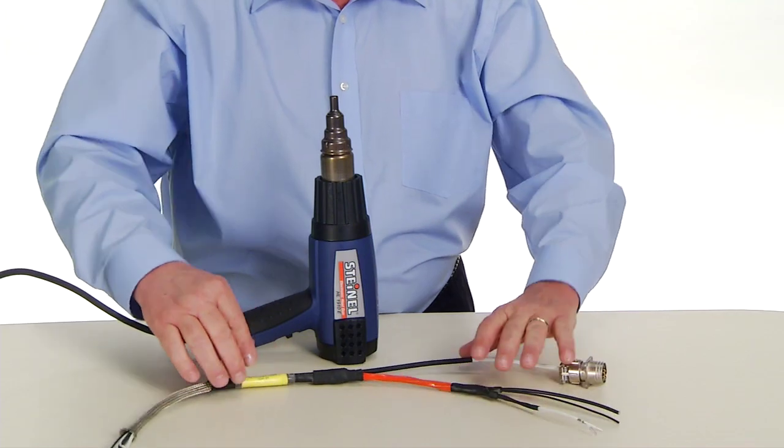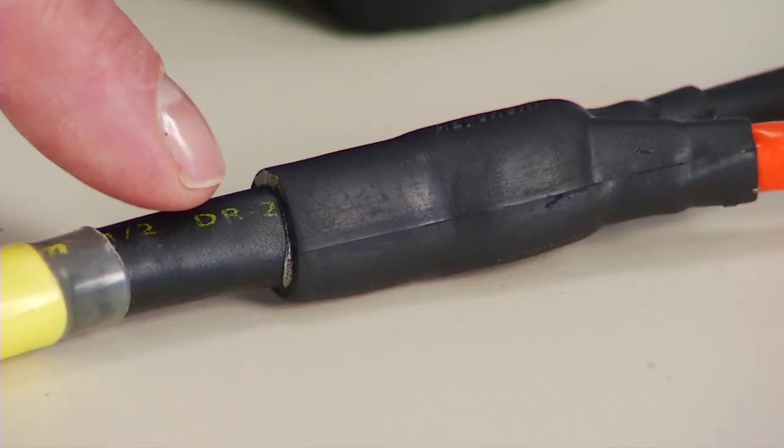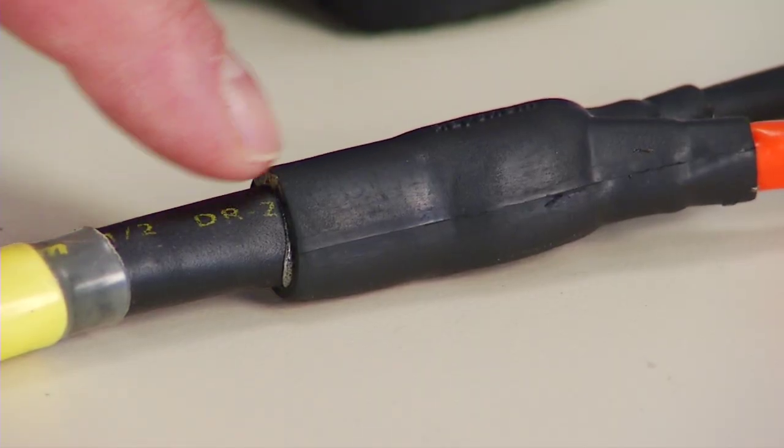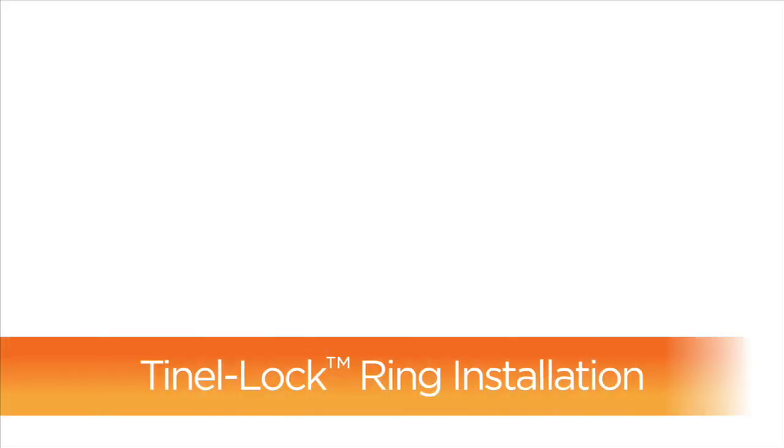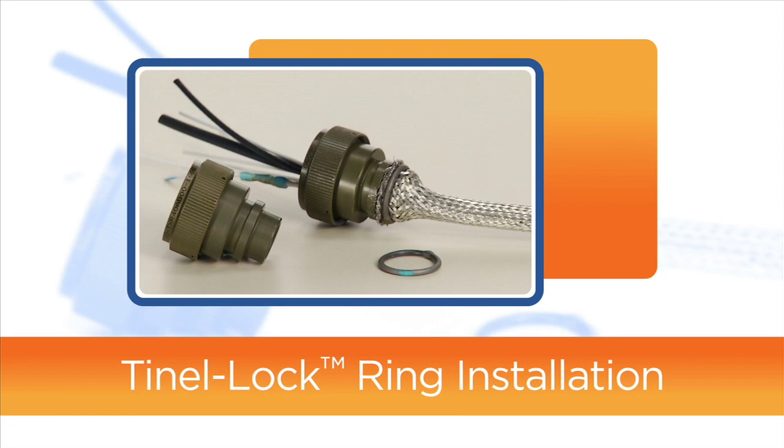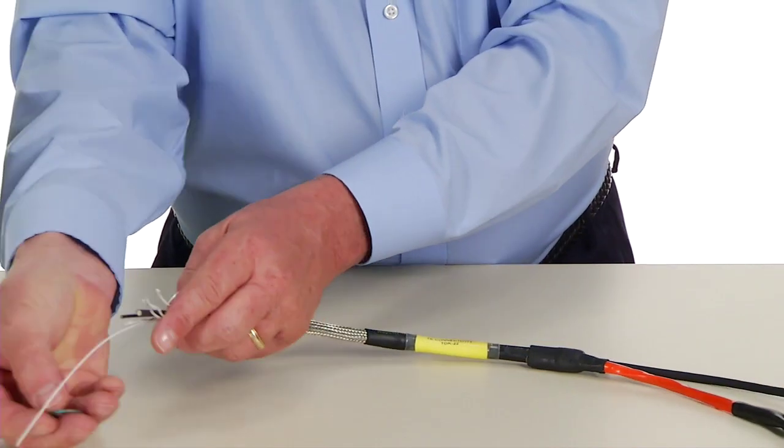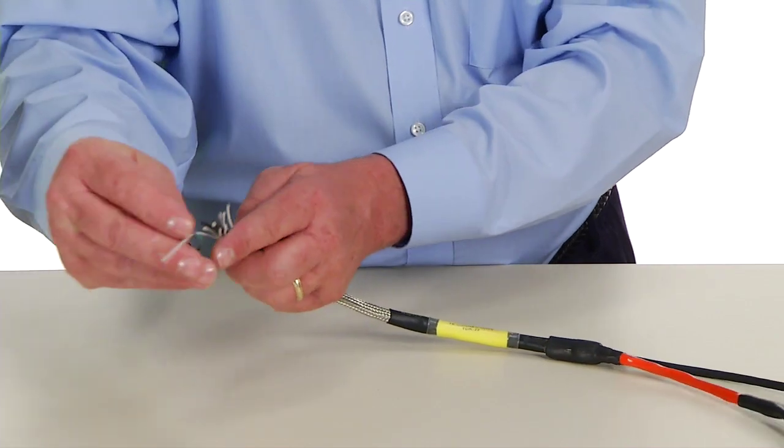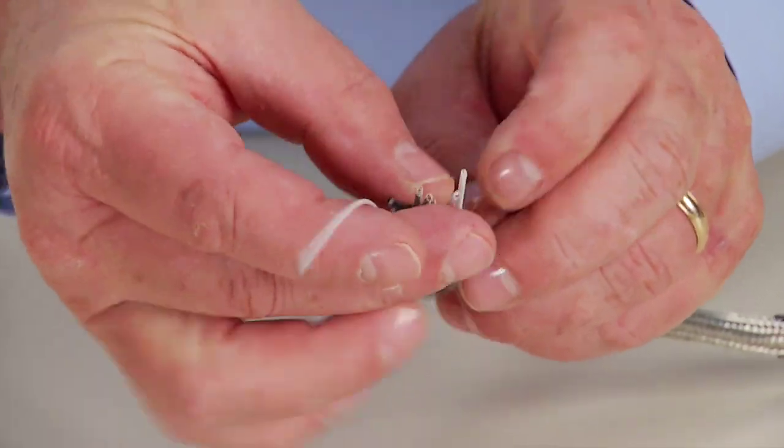Look for evidence that adhesive is present between the outlets and cable jacket. Next, slide the Tynel lock ring over the exposed braid on the P1 leg.